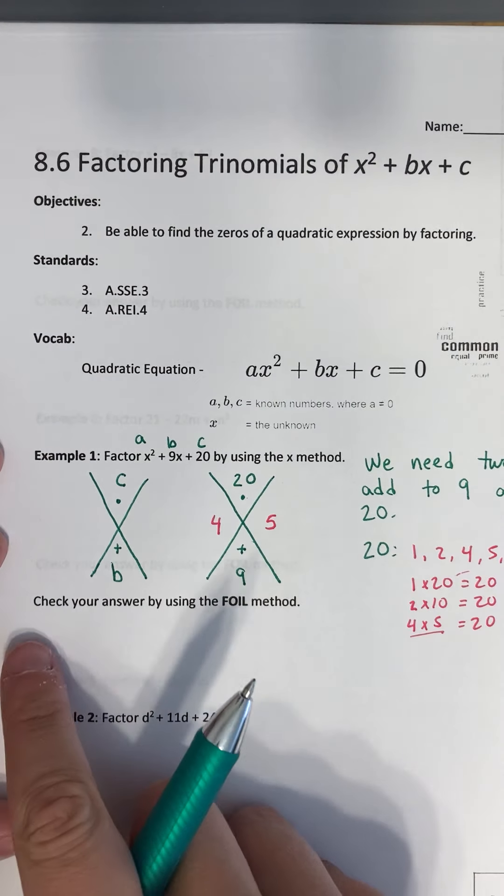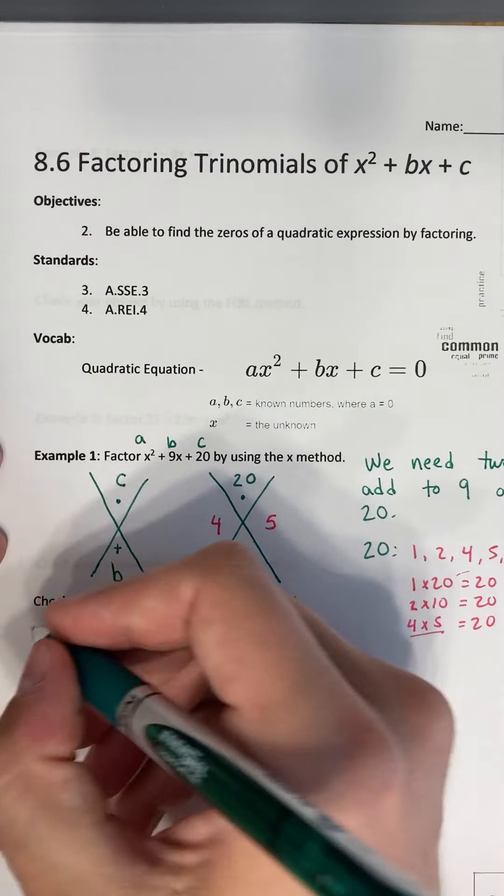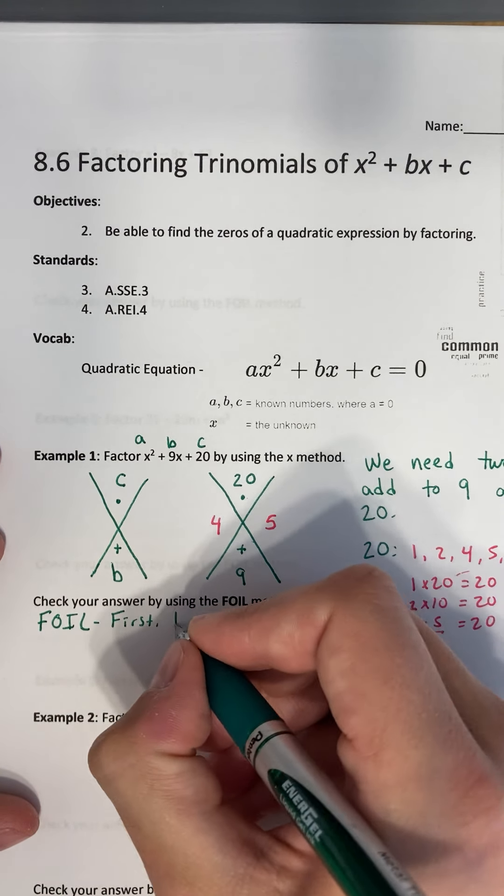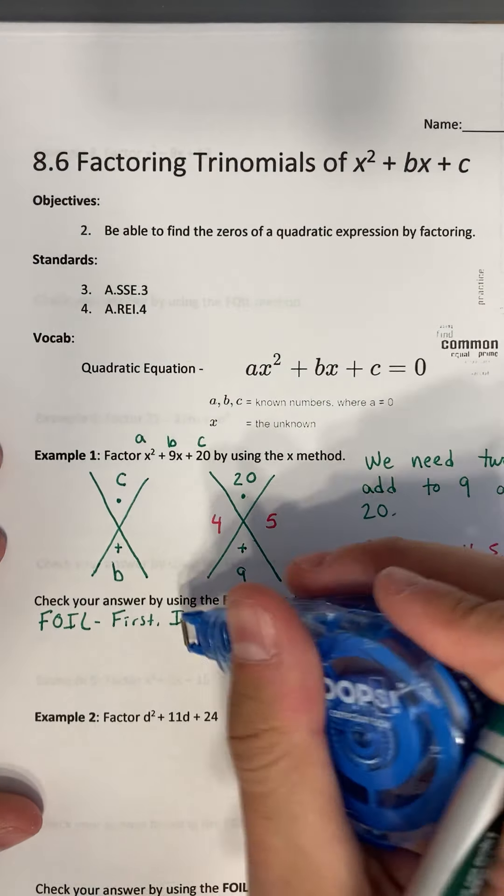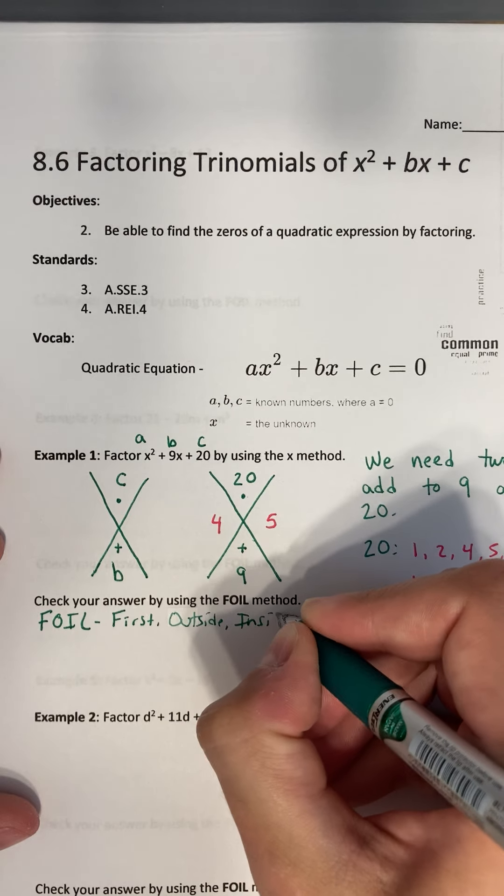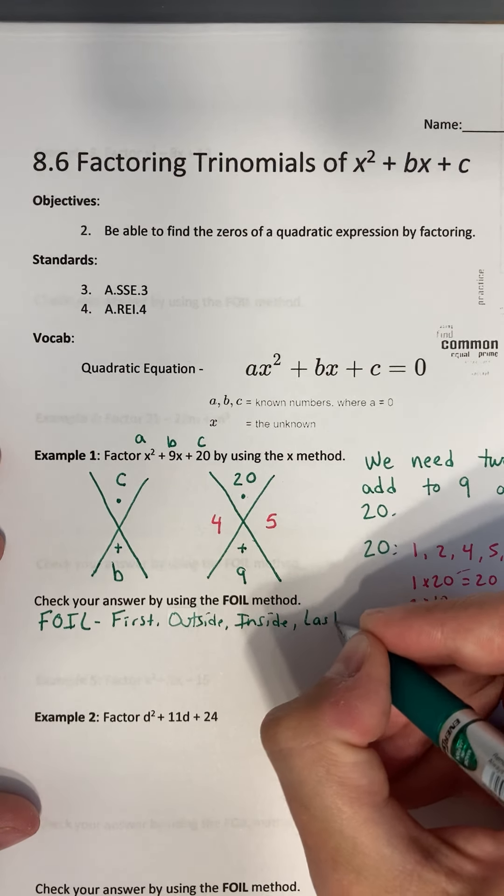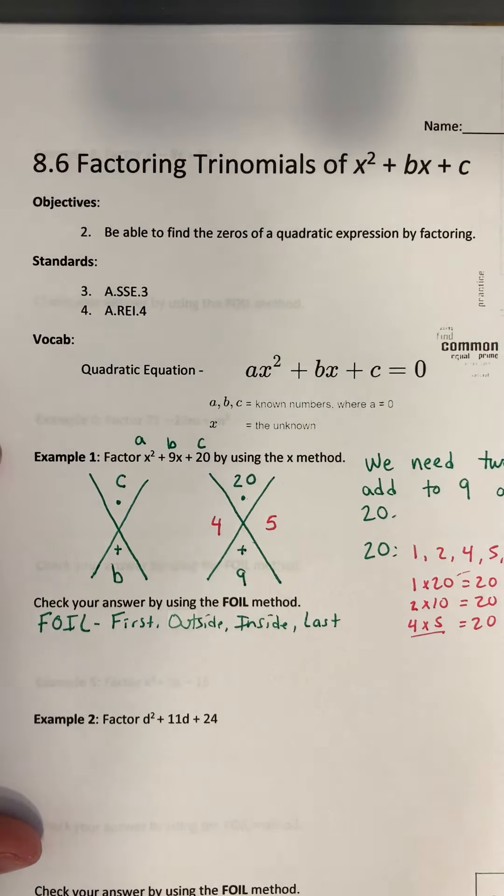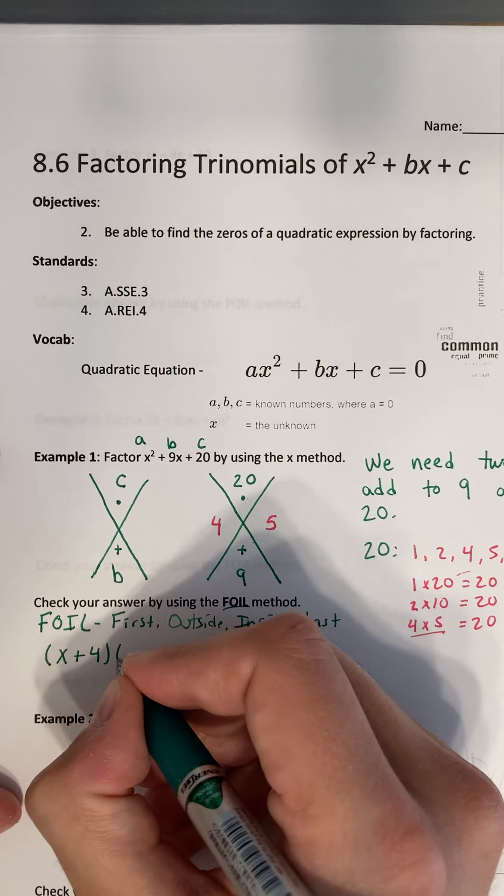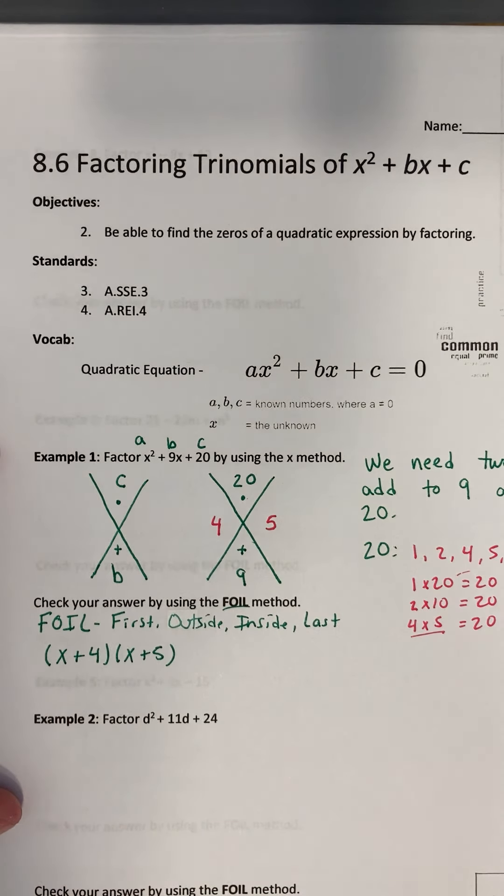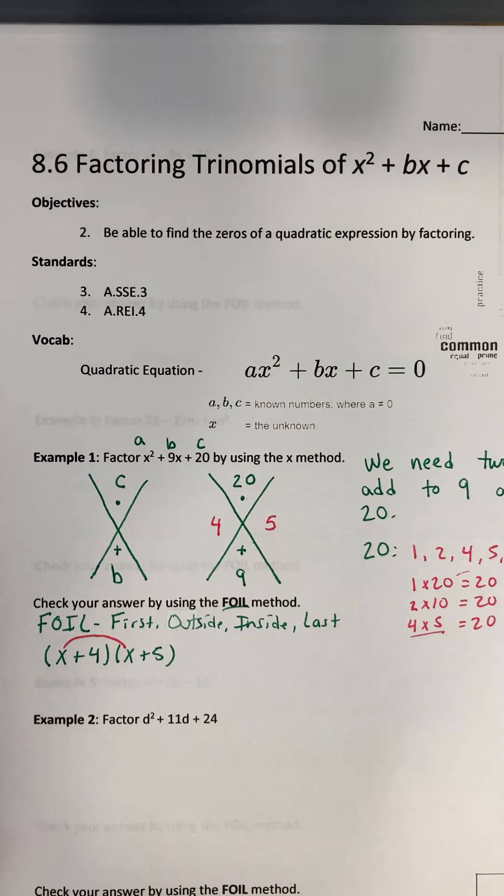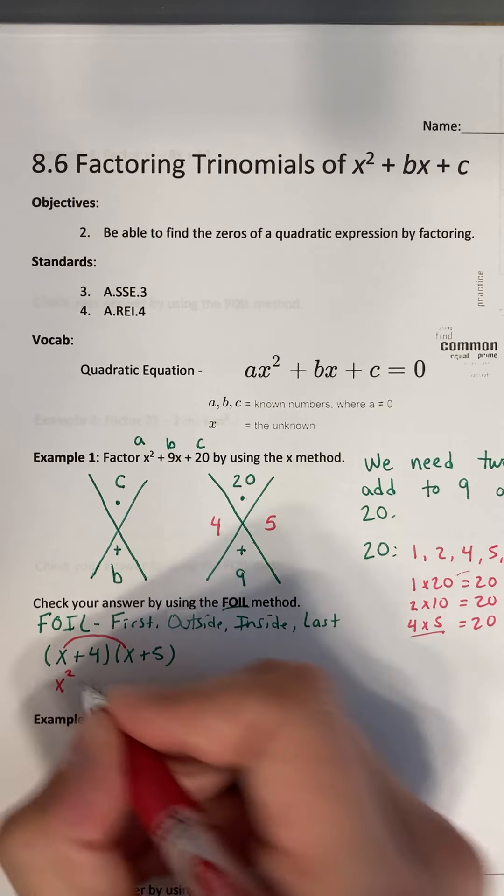So this says to check your answer by using the FOIL method. So FOIL stands for first, outside, inside, and last. So we're going to check our answer. Check to see that we get the right answer by using this method called FOIL. So let's write our answer here. So x plus 4 and x plus 5. We are going to FOIL this. So what that means? That means we're going to take the first two things, and we're going to multiply them together. When we multiply those together, x times x is going to give us x squared. We are now going to take this same x, and we are going to multiply it by the outside. So first, and then we're going to go to the outside. So what is x times 5? Well, we get 5x.